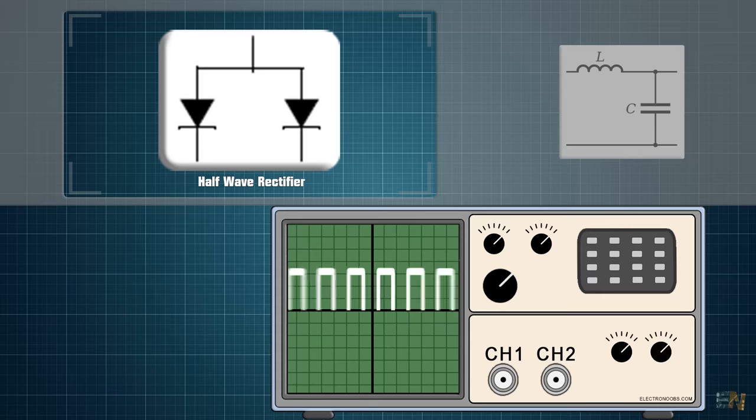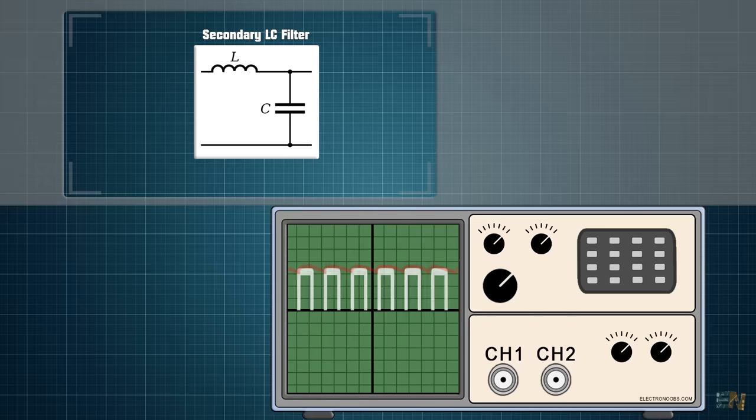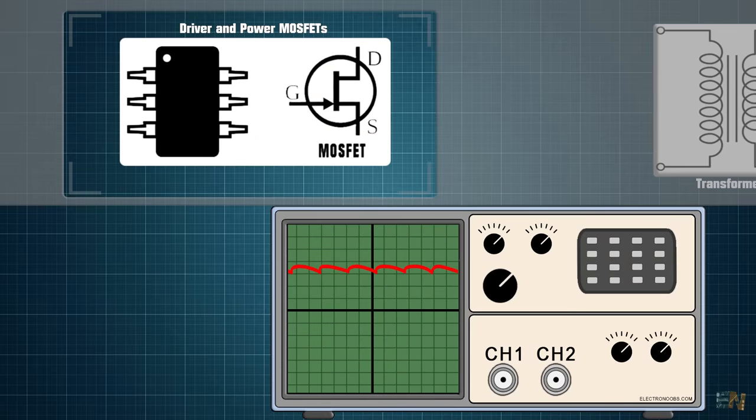We can change the value of this voltage with the PWM signal from the controller. Finally, we filter this with the coil and the capacitor and we get our lower and steady DC voltage output. The feedback will always inform the value to the controller in order to keep always the same voltage that we want.